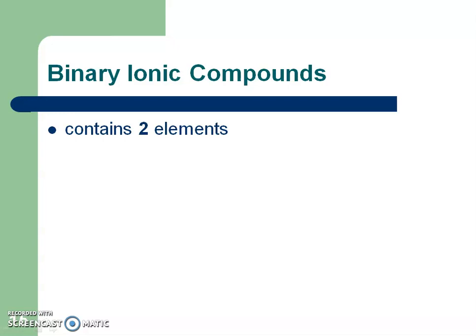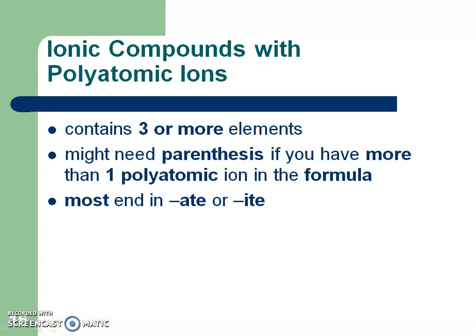Binary means two, so if an ionic compound starts with a metal and has only two elements, it's a binary ionic compound. Ionic compounds with polyatomic ions will have three or more elements. You might need parentheses because if you have more than one polyatomic ion, you need them to signify that. Most polyatomic ions end in -ate or -ite, except for two exceptions you should have highlighted: cyanide and hydroxide. Remember that ammonium is positively charged — all the other polyatomic ions are negative.